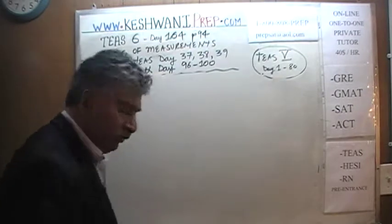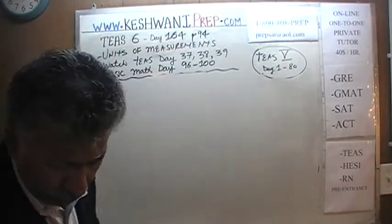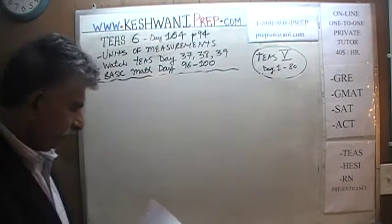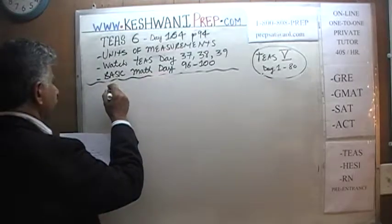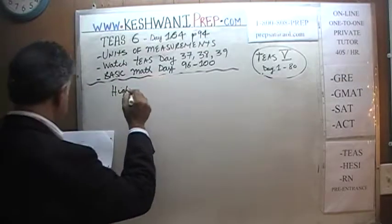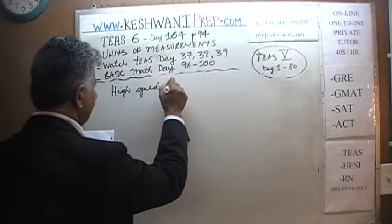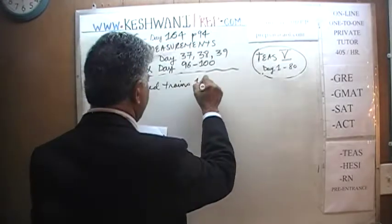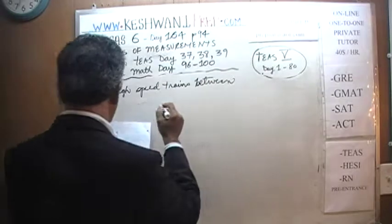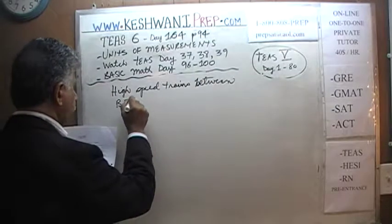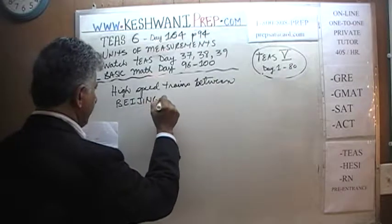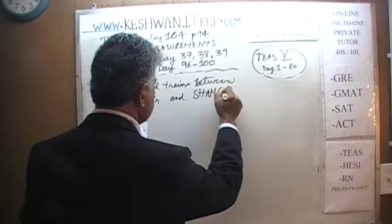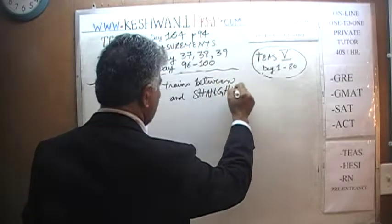Today we will do one problem only. I was going to put this problem on the blackboard ahead of time, but I thought you will get more out of it if I put it together in front of you so that you can understand it. Here is the problem. It says: high speed trains between Beijing and Shanghai.